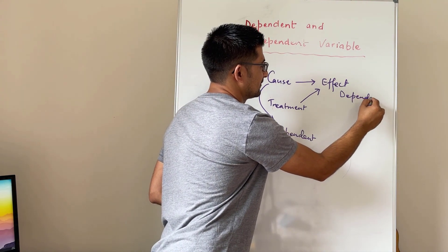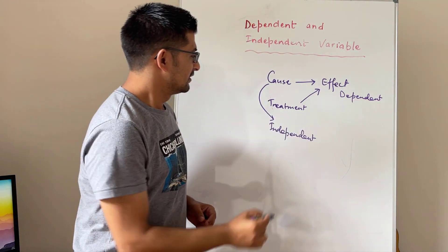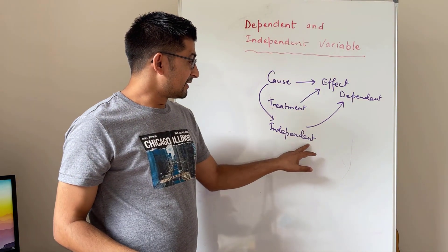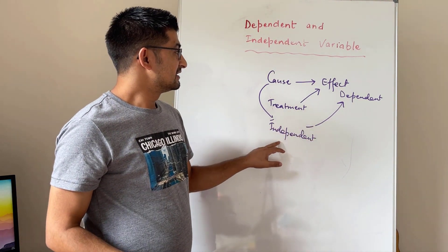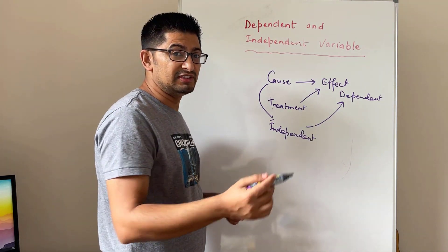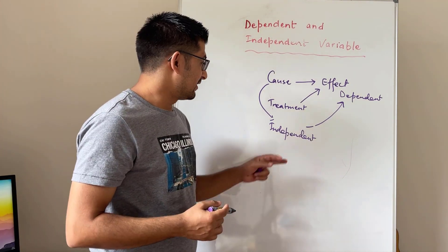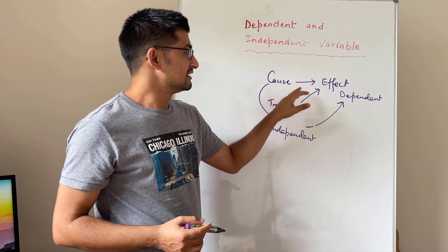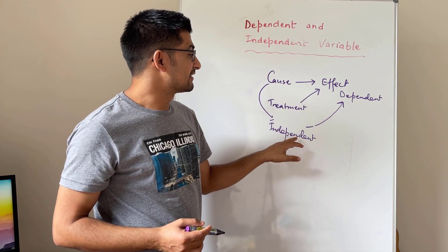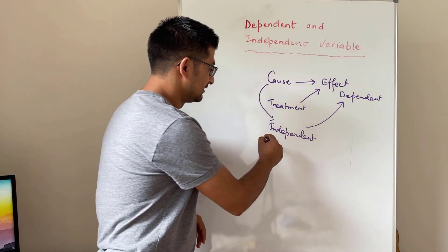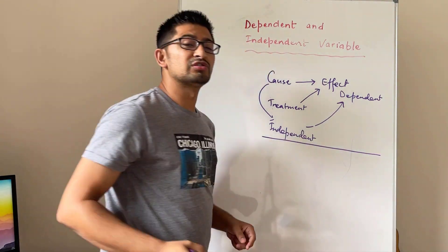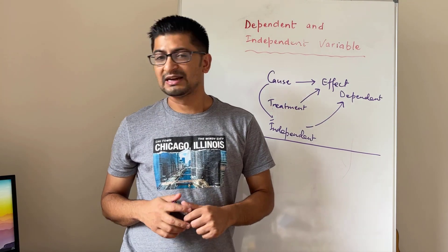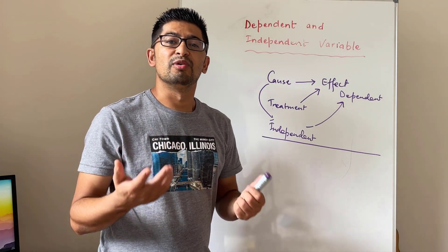So that's how your research goes. Independent variables are basically the cause, which you can manipulate and change, whereas the dependent variables are the effect of that cause and they are dependent on those independent variables. To make it simple, let's go through some examples and then you will be more clear.